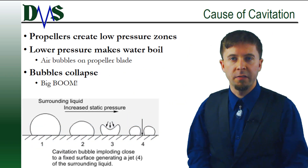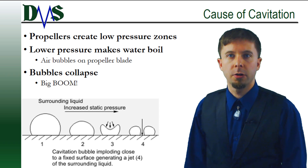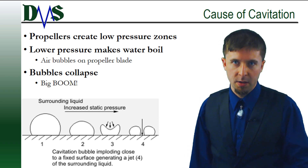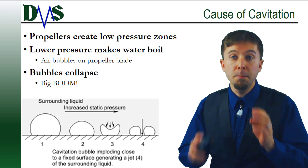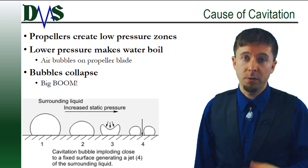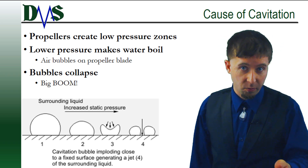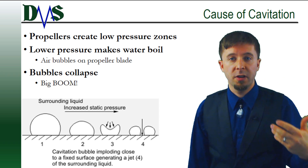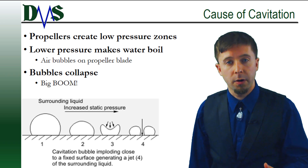How does this mystery of disaster work? Cavitation occurs when small air bubbles form against a propeller blade. The bubbles form because the water actually boils. We know that the boiling temperature of water will change depending on the pressure. Take a pot of water to the top of a mountain and it boils at a lower temperature than it did at sea level — all because that pressure is lower.